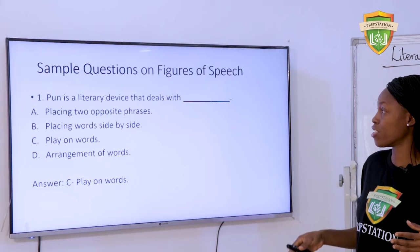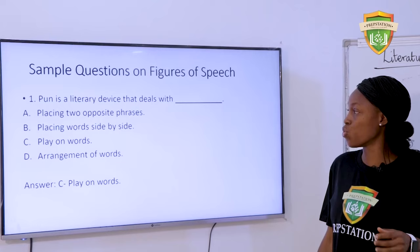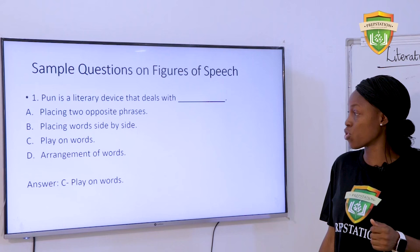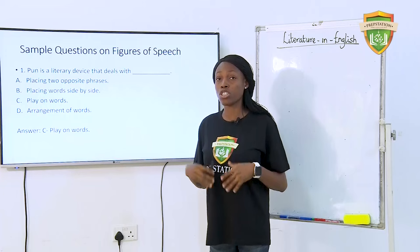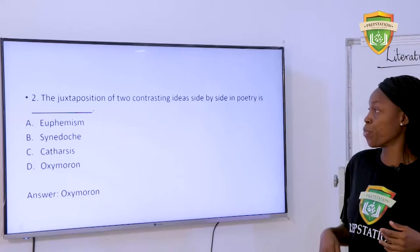Let's look at some sample questions. Question 1: Pun is a literary device that deals with — A. Placing two opposite phrases. B. Placing words side by side. C. Play on words. D. Arrangements of words. The answer is C, play on words. We must remember that pun in literature has to do with a play on words.